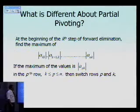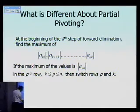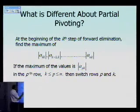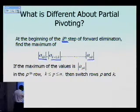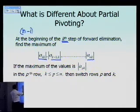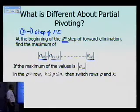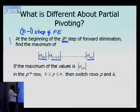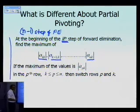So what is different about partial pivoting? This is the only difference between Gaussian elimination with partial pivoting and the naive Gaussian method. At the kth step of forward elimination, you find the maximum absolute value among the elements in the kth column from the kth row down to the nth row. Keep in mind there are n minus 1 steps of forward elimination, and you have to go through this process before each step.